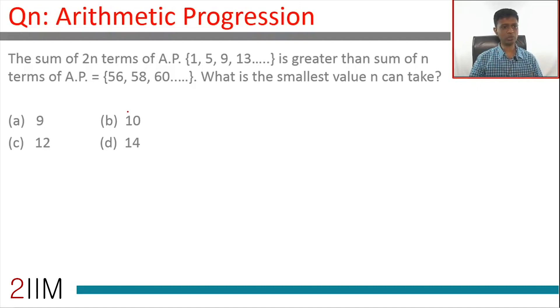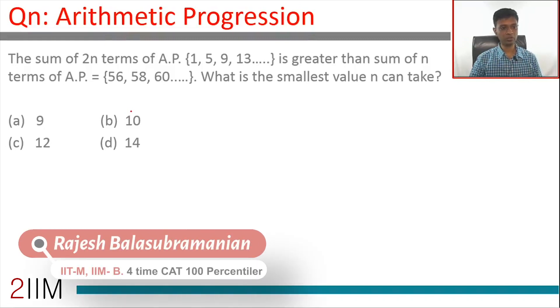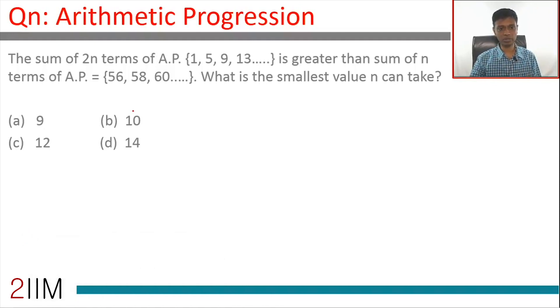Again, dealing with arithmetic progression, the sum of 2n terms of an AP 1, 5, 9, 13 is greater than sum of n terms of AP 56, 58, 60. What is the smallest value n can take? Again, just plugging in the formula and then solving the inequality. Very simple question.